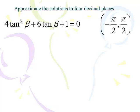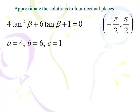Here's the next one: 4tan²β + 6tanβ + 1 = 0. But look at the range — we only want the answer between negative π/2 and π/2. We've cut the circle in half and we're perfectly fine reporting negative answers, which was not the case in the previous examples where it was always 0 to 2π. a is 4, b is 6, c is positive 1.